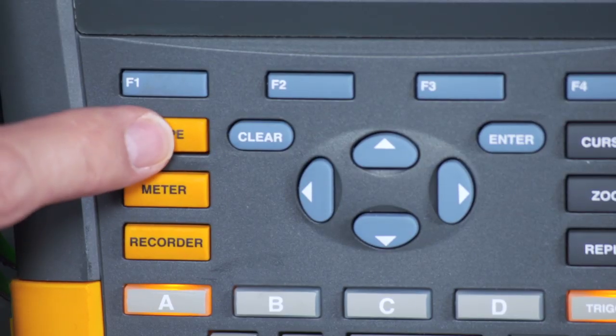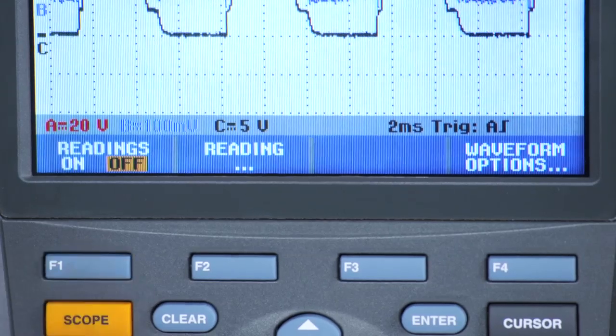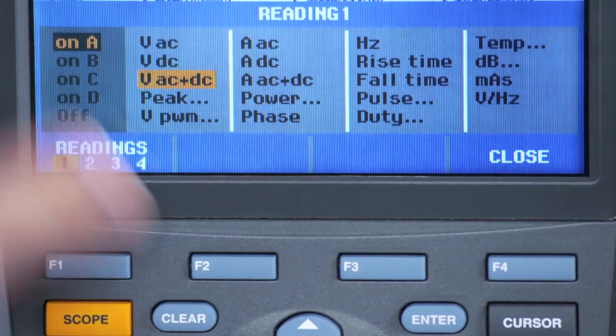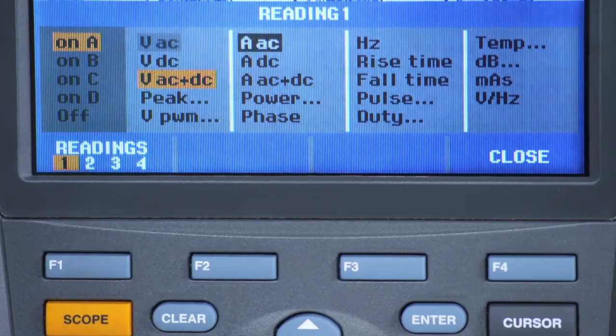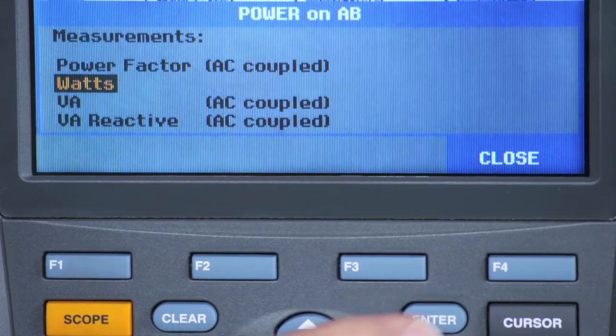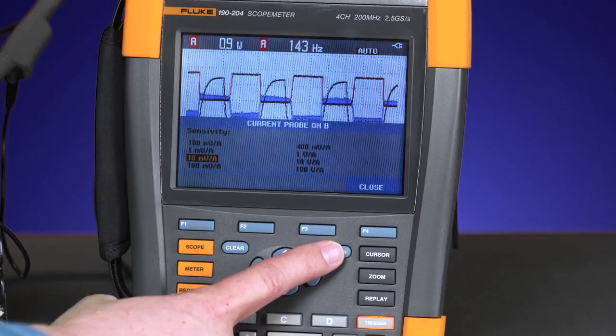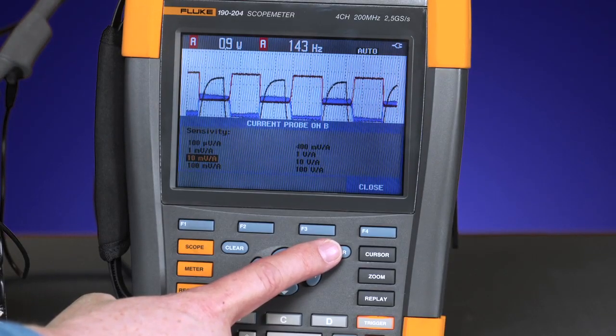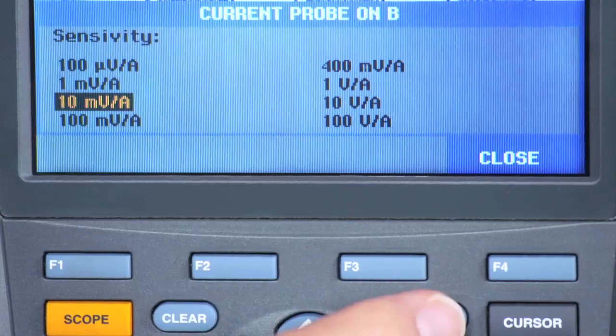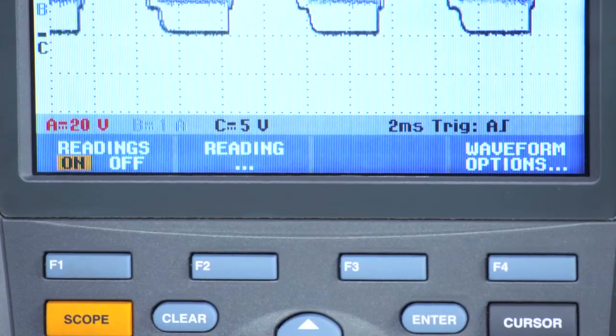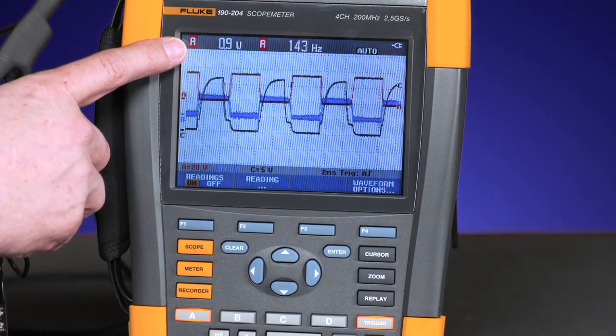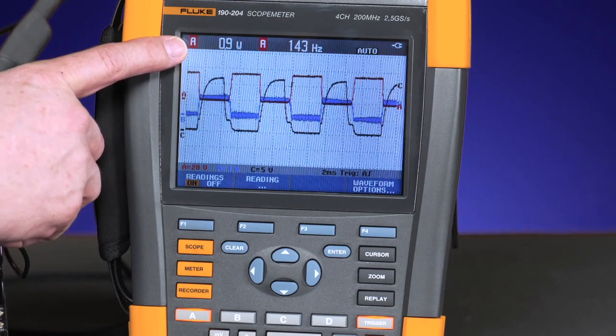Press the scope button, readings on, then choose reading one to measure power across A and B. Selecting Watts mode will give you the unit of measure you need. Scale the sensitivity on the input probe to 10 millivolts per amp or whatever the current probe you have selected. Once you've stepped through those key presses, you can see input A or measurement A. You're measuring the power in watts across the fast switch.